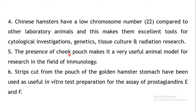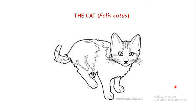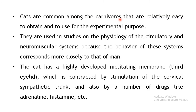Chinese hamsters have a low chromosome number, making them useful in cytological investigations, genetics, tissue culture, and radiation research. The cheek pouch makes hamsters useful in immunology. A strip from the golden hamster's stomach can be used for in vitro assays of prostaglandin E and prostaglandin F.